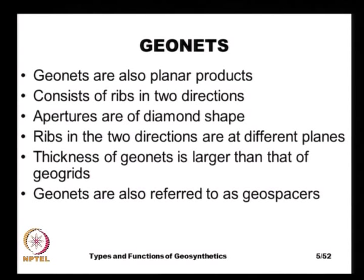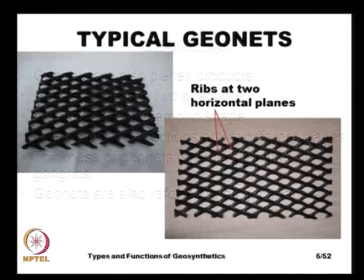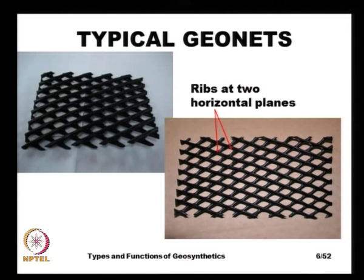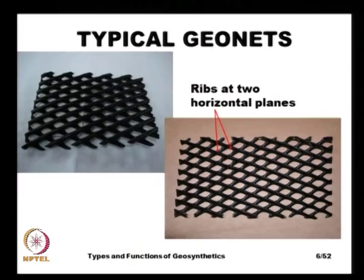Sometimes geonets are also called geospaces, because we need to create some space for free flow of water or for other purposes. Typical geonets have ribs in two different planes, and the thickness of each rib is very large compared to that of a geogrid. The aperture openings are diamond-shaped rather than square or rectangular.